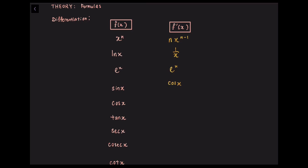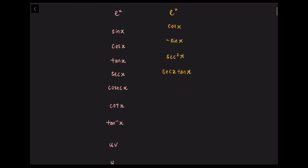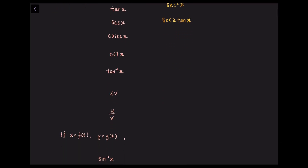The differential of sin x is cos x. The differential of cos x is negative sin x. The differential of tan x is sec squared x. The differential of sec x is sec x tan x. The differential of csc x is negative csc x cot x. The differential of cot x is negative csc squared x. The differential of inverse tan x is 1 over 1 plus x squared.